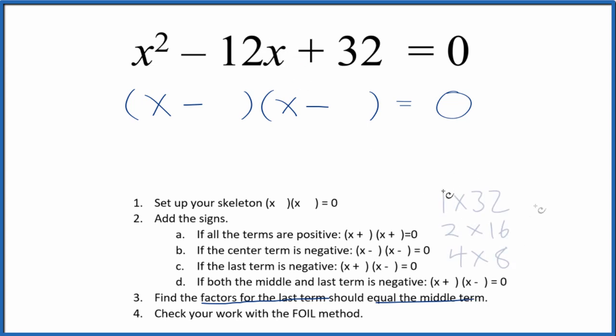Let's write the factors for 32. And I can see that 4 times 8, that's 32. 4 plus 8, that's 12. So I'll put 4 here and 8 here, and we're done.